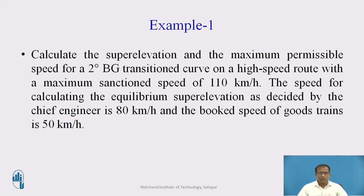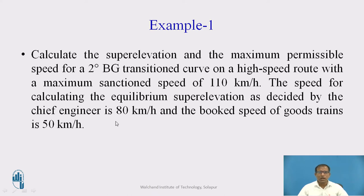The values given are for a 2-degree BG transition curve with no restrictions on transition curve provision. The sanction speed is given as 110 kmph, the speed for calculating equilibrium super elevation is 80 kmph, and the goods train speed is 50 kmph. Considering this, calculate the safe speed for this 2-degree BG curve.